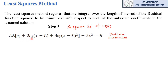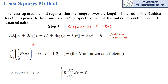The least square method requires that the integral over the length of the rod of the residual function R squared be minimized with respect to each of the unknown coefficients in the assumed solution. We have three unknown coefficients c1, c2, and c3, so this integral will be forced equal to zero at three different points, because we have three unknowns.